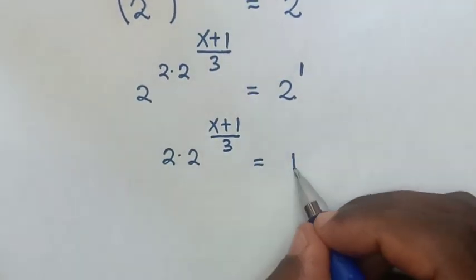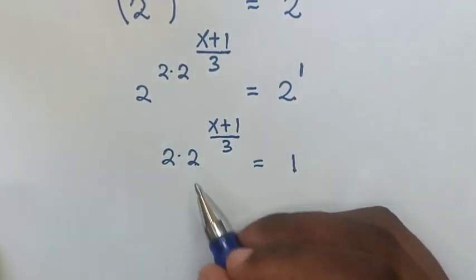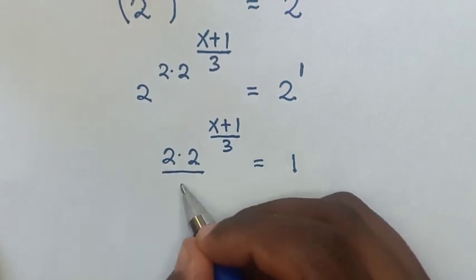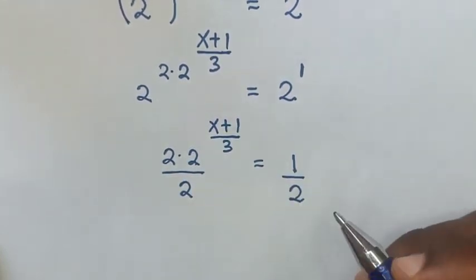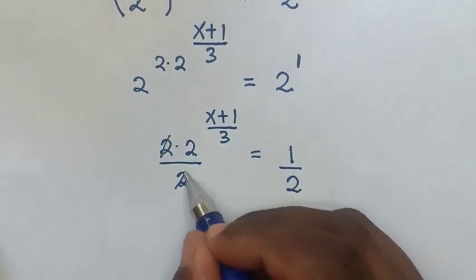Then we make this 1 the same base of 2, so we will divide by 2 on both sides. So this 2 and this will cancel,